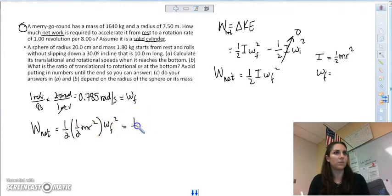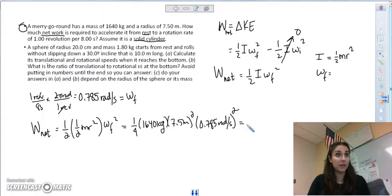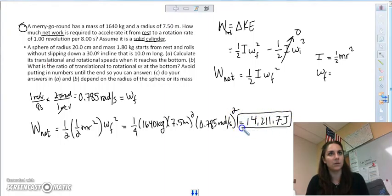Let me plug in our numbers. This becomes one fourth. The mass is 1640. The radius is 7.5 and we're going to square that number times the 0.785 radians a second. We're also going to square that number. One over four is 0.25 times 1640 times 7.5 squared times 0.785 squared. So we get 14,211.7 joules. That's the net work done. That's number one.